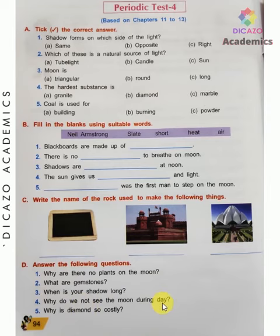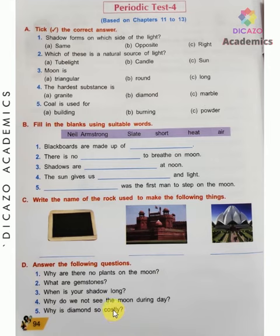Why do we not see the moon during the day? We do not see the moon during daytime because of sunlight. Why is diamond so costly? Diamond is so costly because it is very shiny and beautiful. This is the end of Periodic Test 4.